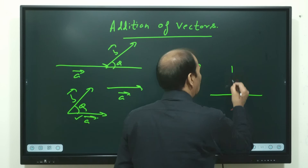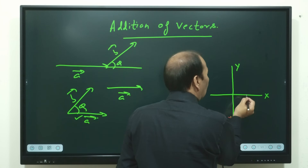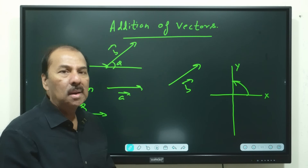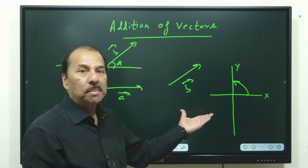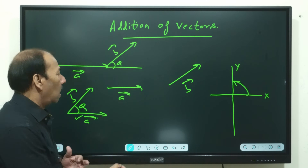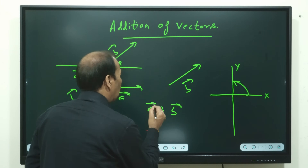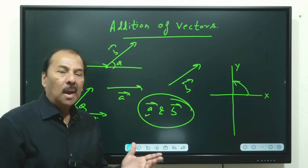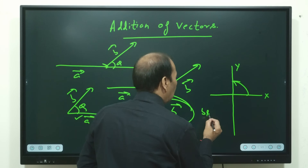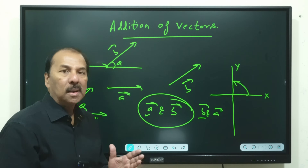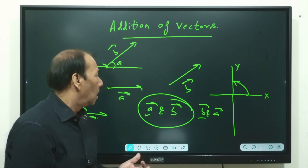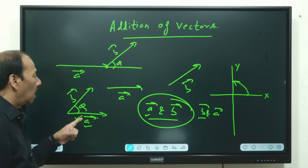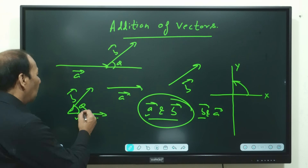If this is your x-axis and this is the y-axis, then angles are measured in the anti-clockwise direction — that is the standard convention. When we say angle between A and B, A becomes the reference vector, so we measure from A towards B in the anti-clockwise direction.